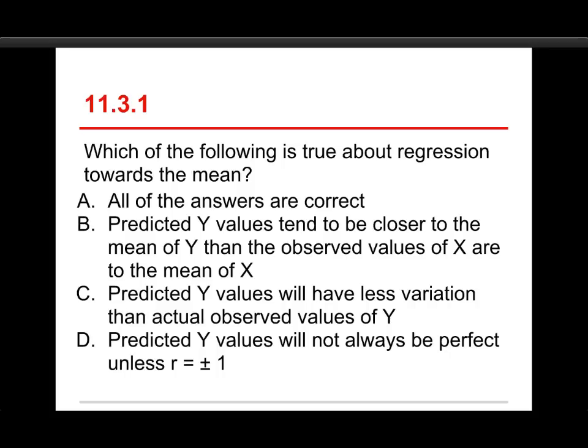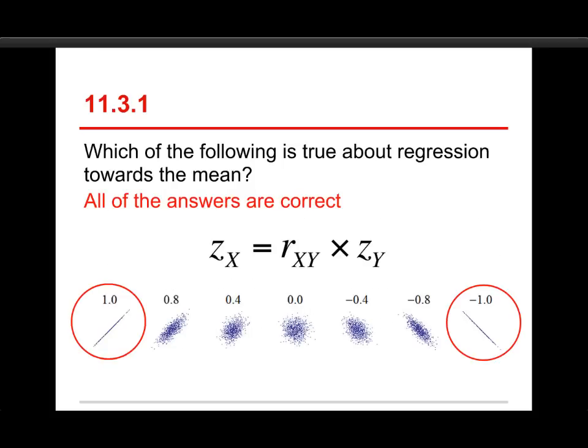Well, in this case, the answer is A. All of these are correct, B, C, and D. And it all has to do with this particular formula right here. Again, it's easiest to think about correlation and regression when you're dealing with Z-scores.